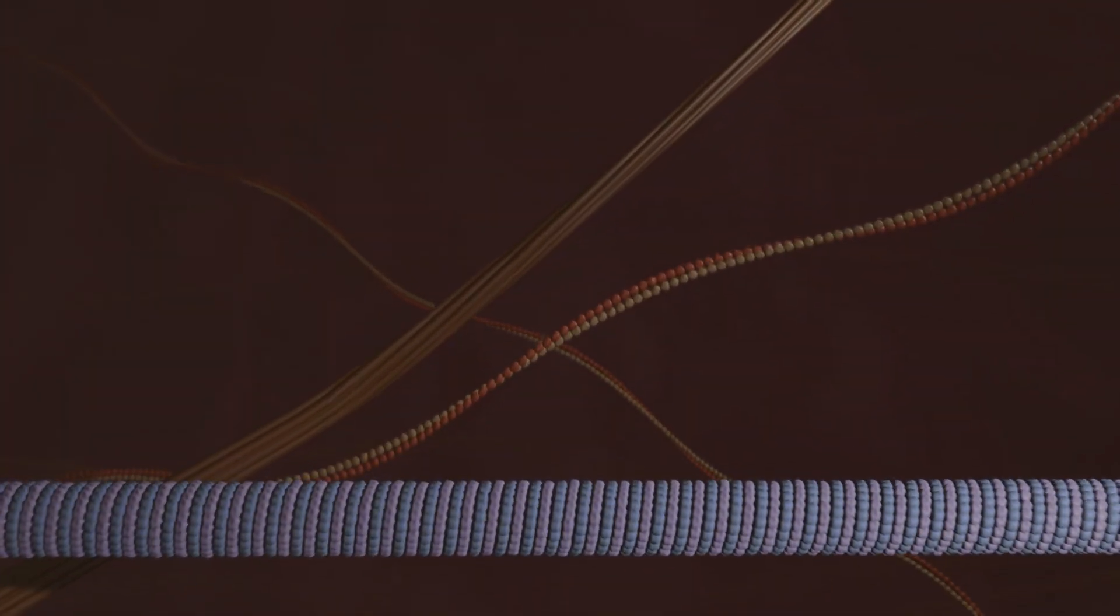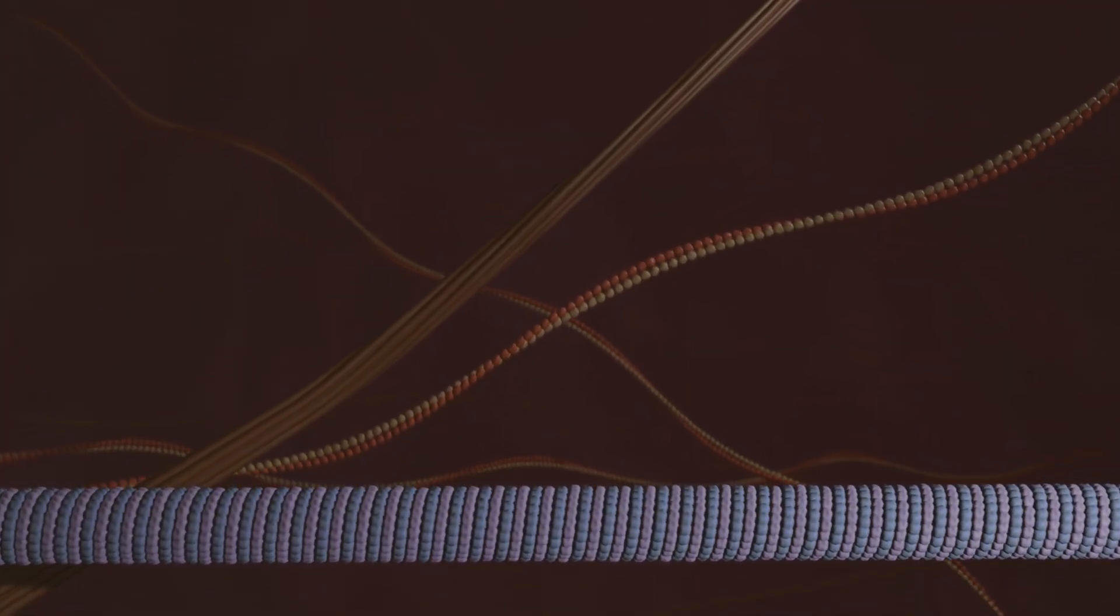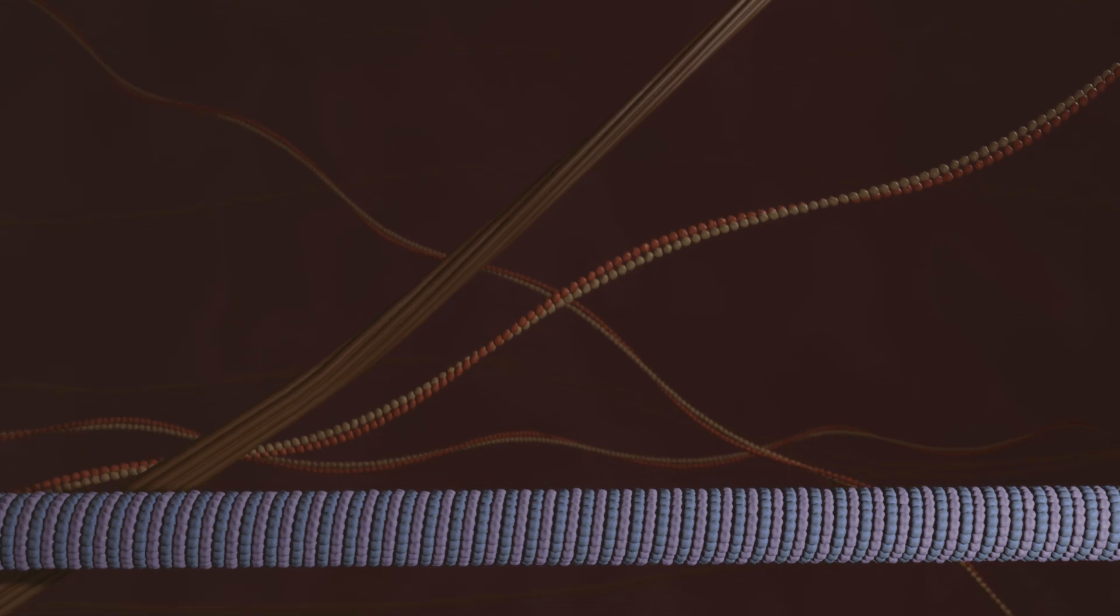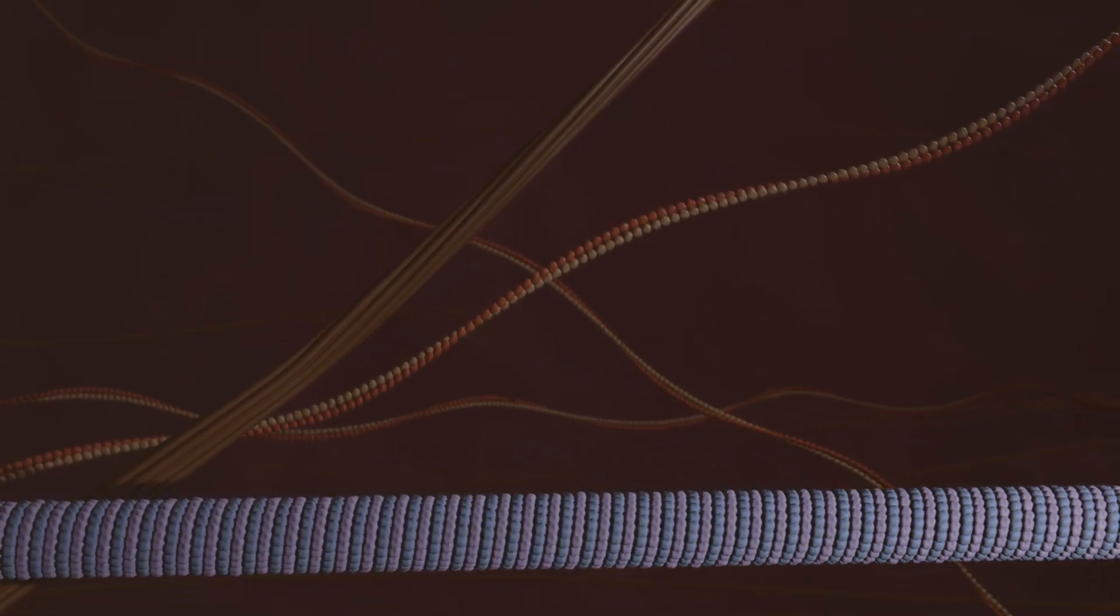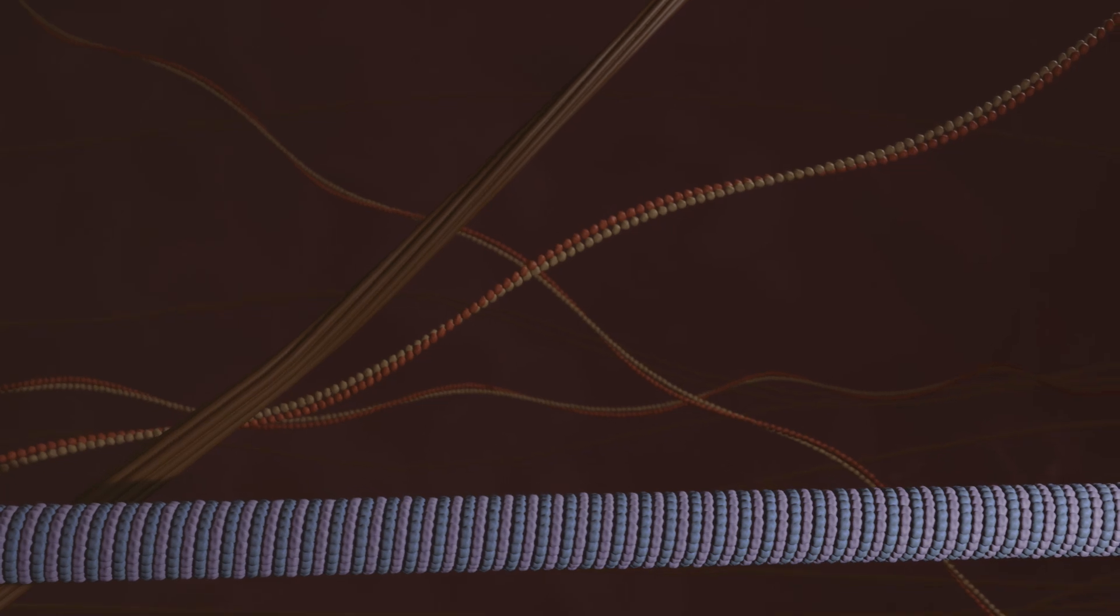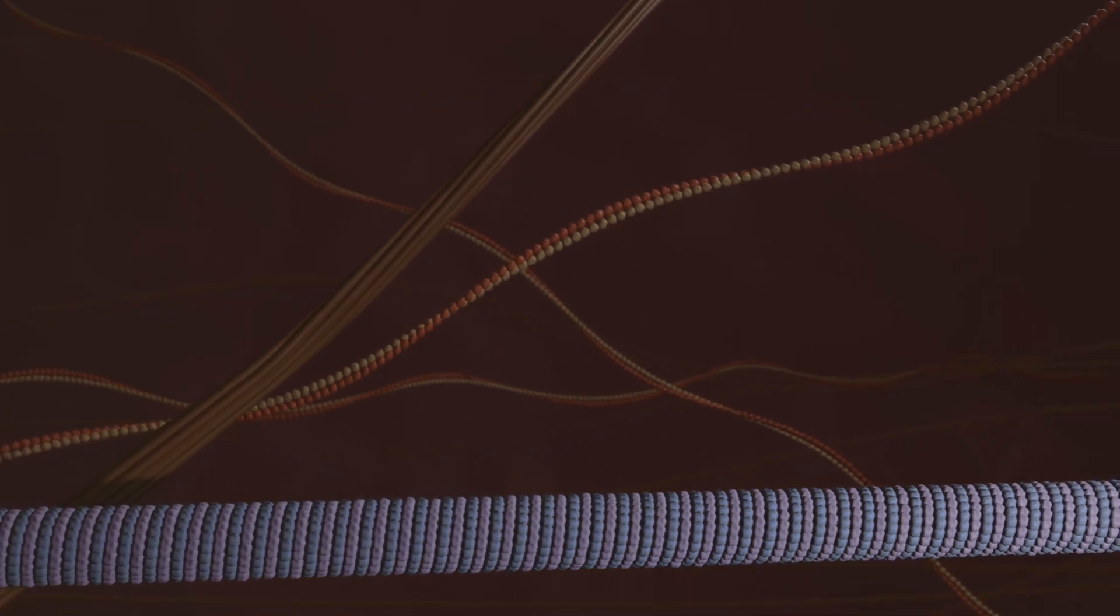The cytoskeleton is a complex and dynamic network consisting of microtubules, intermediate filaments, and actin filaments. It stabilizes the cell, enables movement, and fixes the cell organelles.